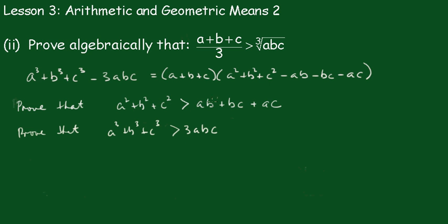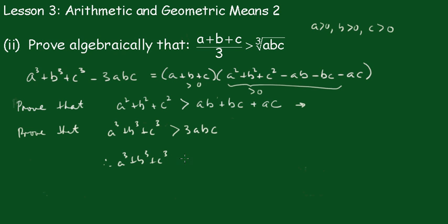To do that, we've established that a² + b² + c² − ab − bc − ac is greater than 0, which means that (a + b + c)(a² + b² + c² − ab − bc − ac) must be greater than 0, since a, b, and c are positive. Therefore a³ + b³ + c³ − 3abc > 0, and therefore a³ + b³ + c³ > 3abc.